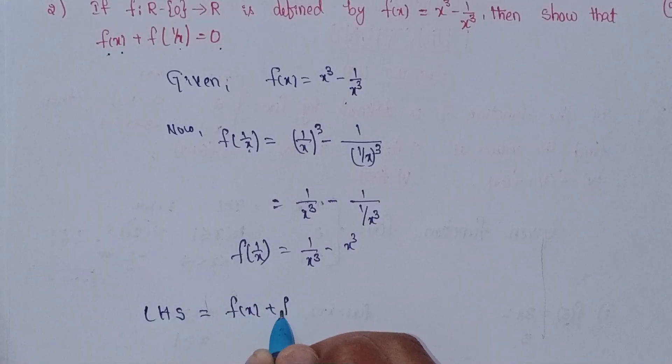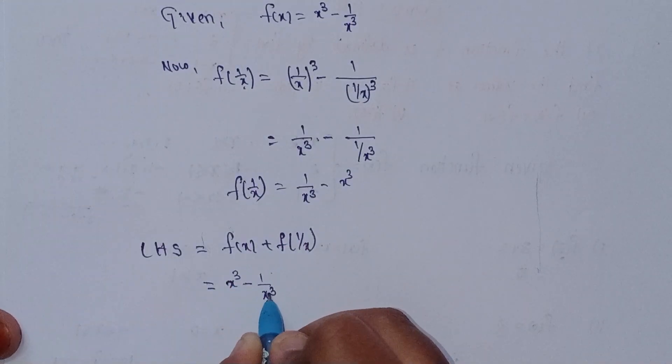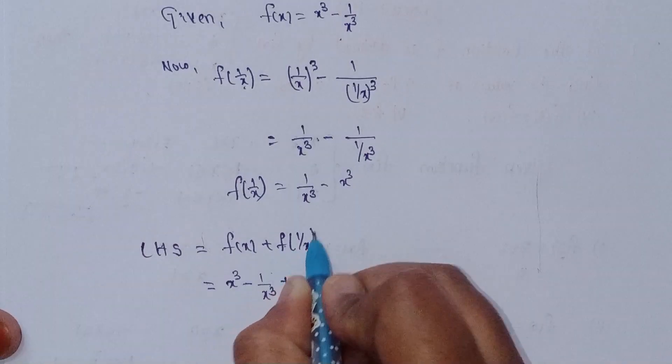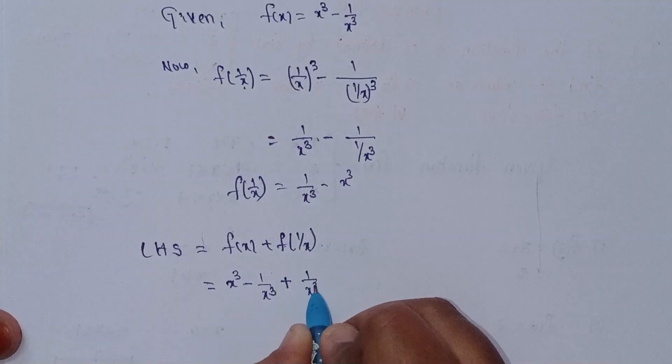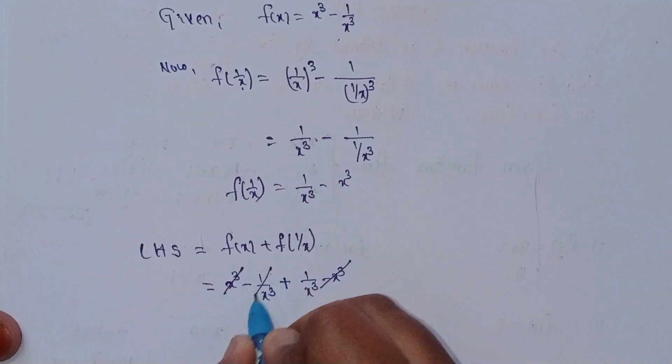LHS equals f(x) + f(1/x). f(x) value is x³ - 1/x³, plus f(1/x) is 1/x³ - x³. Adding these: x³ minus x³ cancels, and -1/x³ plus 1/x³ cancels, giving us 0.